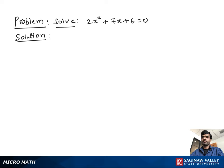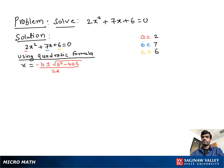Solve 2x squared plus 7x plus 6 equal to 0. As we see, this is the standard quadratic equation. We find out the values of a, b, and c, which are a is equal to 2, b is equal to 7, and c is equal to 6. Now using the quadratic formula, x is equal to negative b plus or minus square root of b squared minus 4ac over 2a.